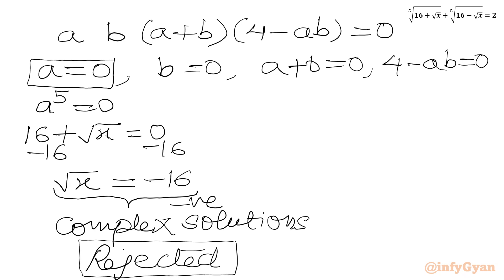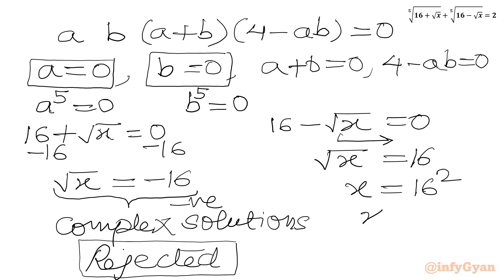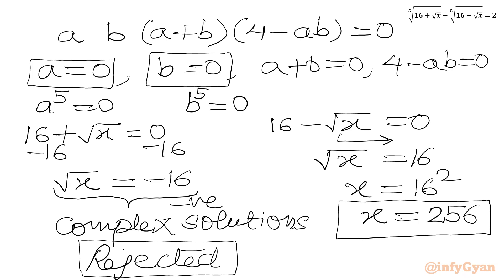For the case b equals 0: b⁵ equals 0, so 16 minus square root of x equals 0, giving square root of x equals 16. Squaring both sides, x equals 16² equals 256. This is our first real solution: x equals 256.